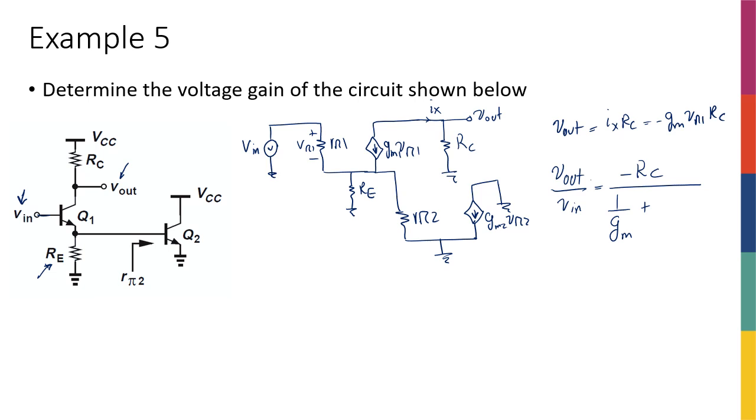It's going to be equal to negative RC over 1 over GM, plus whatever resistance that I have at the emitter. So I can see that at the collector, I only have RC, so I just have to put RC here. But at the emitter, I have RE.